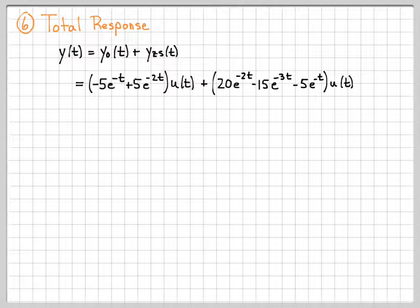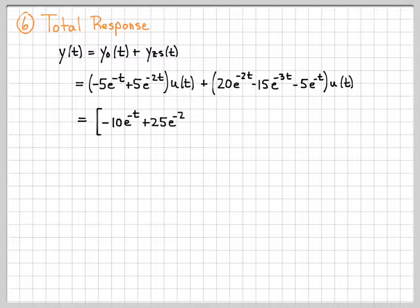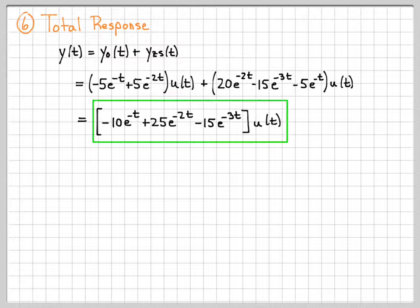And note that I have some common terms. I have some e to the minus t's here and here, so those can combine. I have some e to the minus 2t's here and here, so those can combine. So if I combine like terms, I end up with minus five and minus five is minus 10. I end up with five plus 20 is 25. And then the e to the minus 3t's have no like term, so it just comes through as minus 15. So this is the total response of my system.